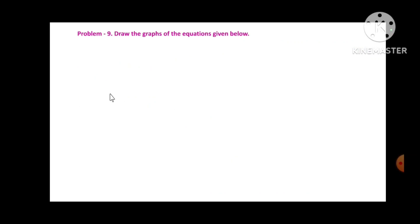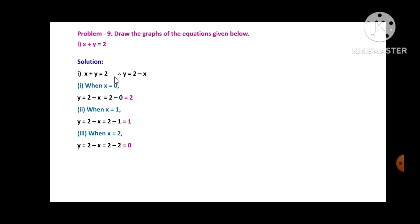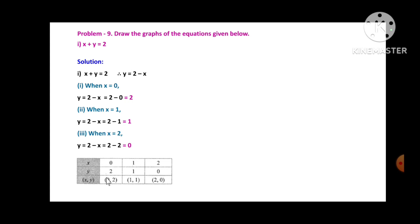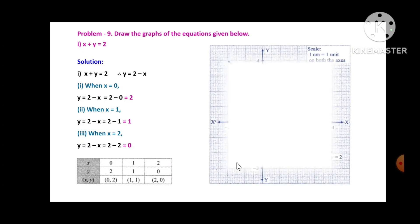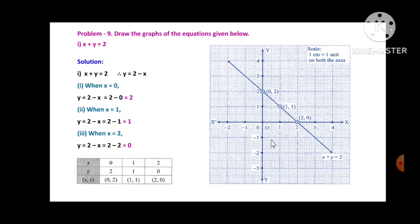Problem 9: Draw the graph of x + y = 2. Rearranging, y = 2 - x. Taking three points: when x = 0, y = 2; when x = 1, y = 1; when x = 2, y = 0. These values are tabulated, and after plotting the points (0,2), (1,1), and (2,0), all three points are collinear and form a straight line.